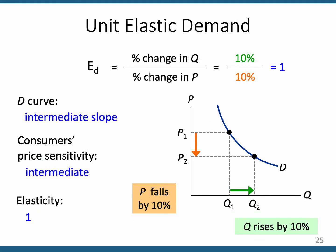Here's an example of a demand curve more like a 45-degree angle. The price change and the quantity change are pretty close to being the same. If that's the case, the numerator is the same as the denominator, and you have unit elasticity — demand is neither elastic nor inelastic.